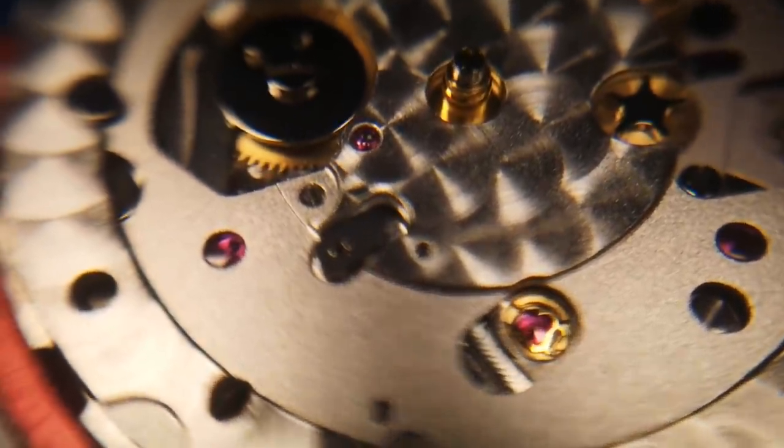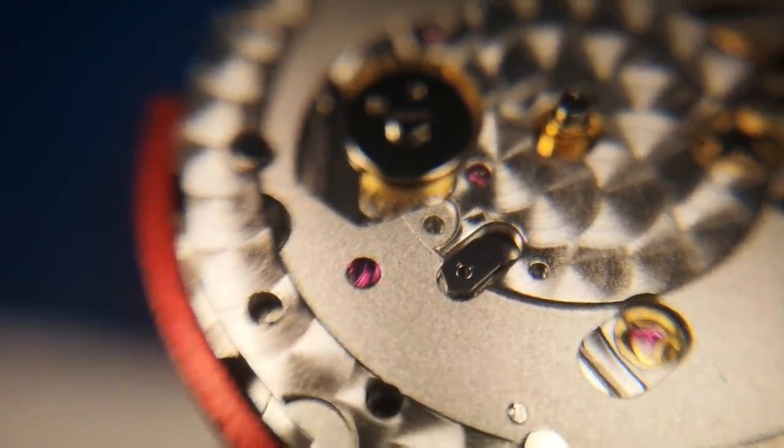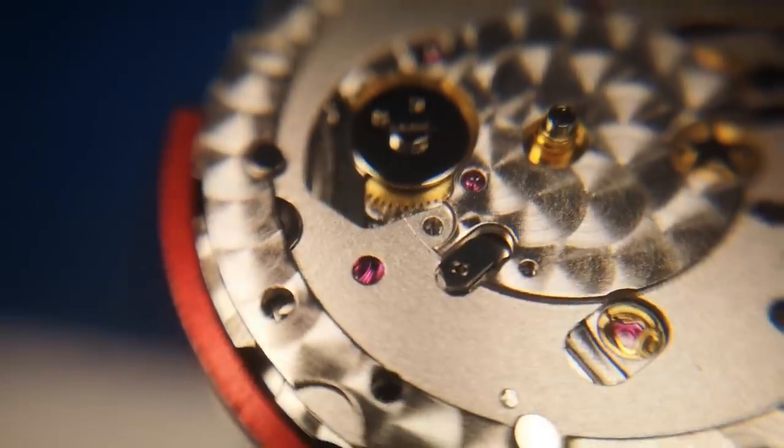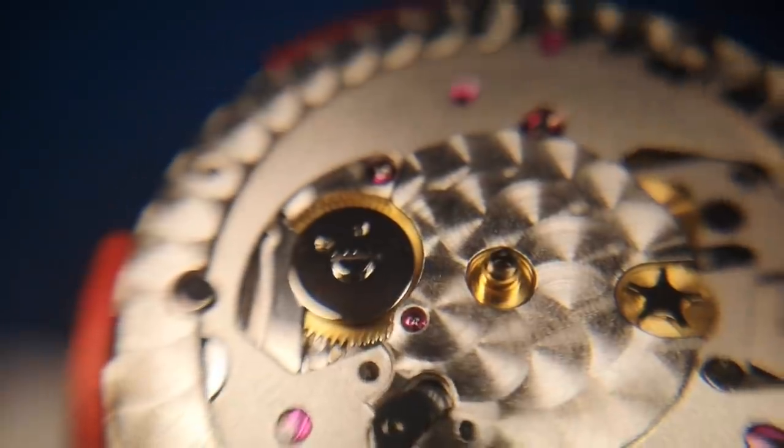You can just see in the center of the frame there coming into focus the end of the date wheel jumper spring, and there is that little wheel that I mentioned. And you have to make sure if I just zoom in on that at the pivot on that little wheel next to the advancing wheel.